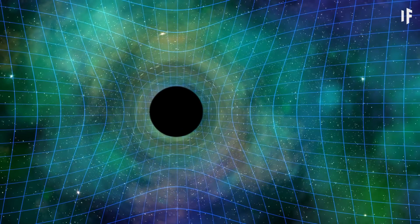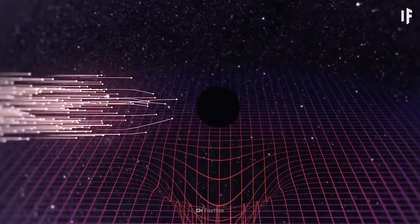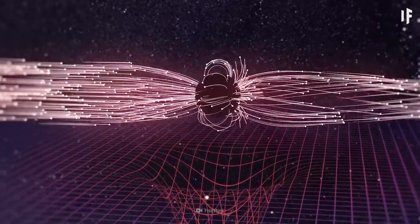This is because the black hole can warp space and time to such a degree that some of the light orbits the black hole in a full circle. Let me explain.